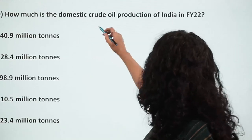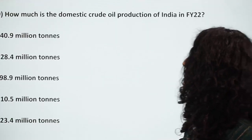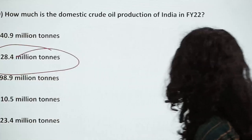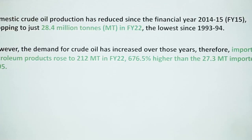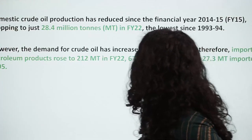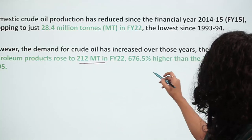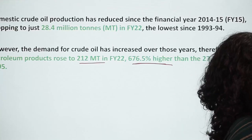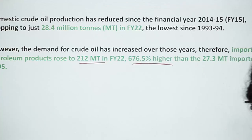How much is the domestic crude oil production of India for financial year 2022? The domestic crude oil production for our country for FY 2022 is 28.4 million tons. The demand and import of crude oil has increased over the past years from 212 million tons — that is 676.5% higher than what was imported in financial year 1995.